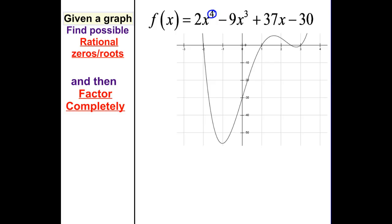So if you look at this problem here, it's going to have four zeros, and it's going to possibly have four rational zeros. The roots are where it crosses the x-axis. This part right there, this part right there, this part right there, and that part right there are your actual rational zeros — those are where it crosses your x-axis.